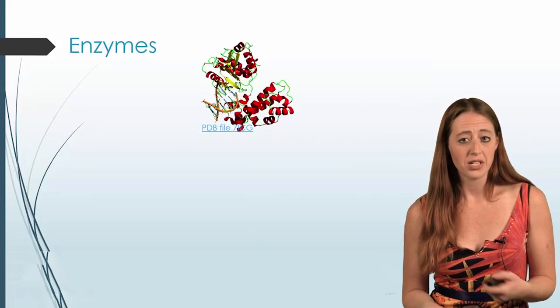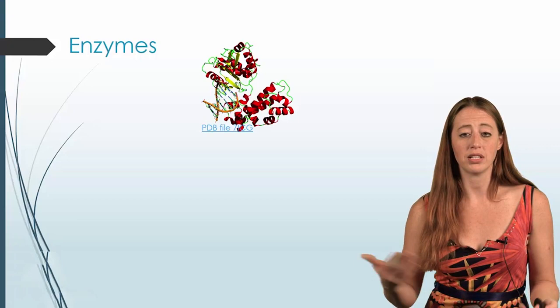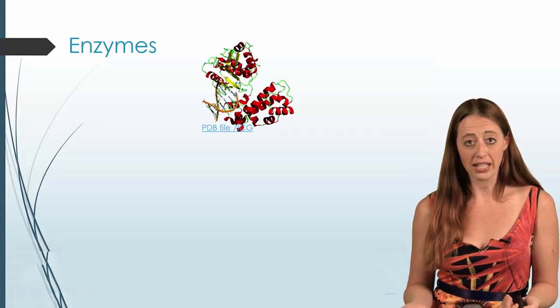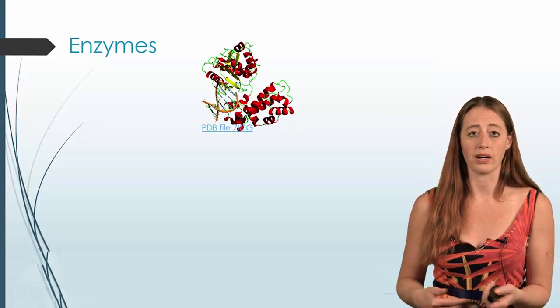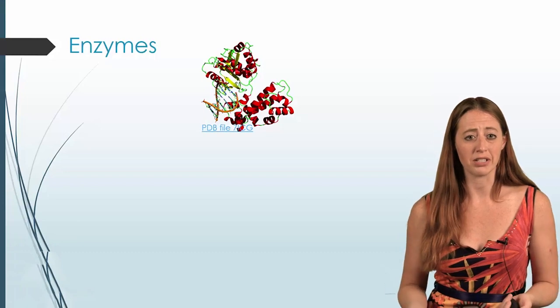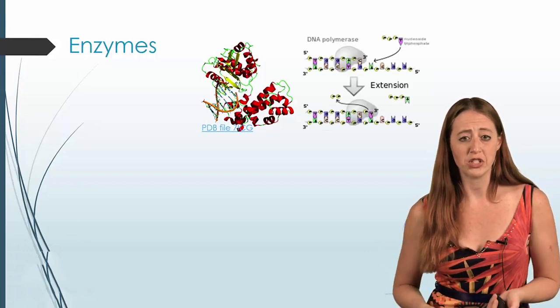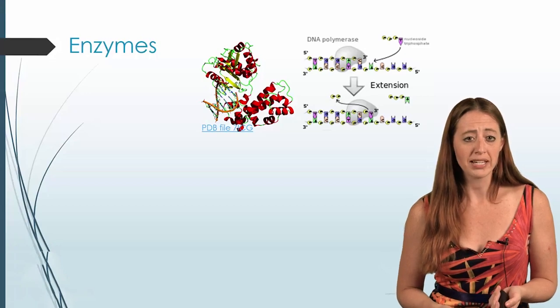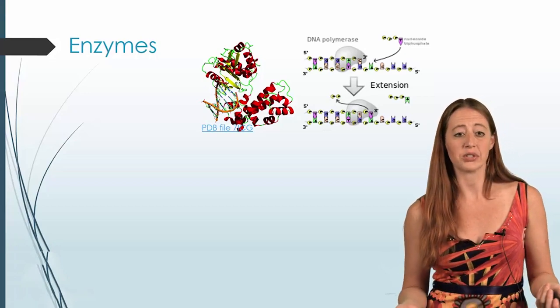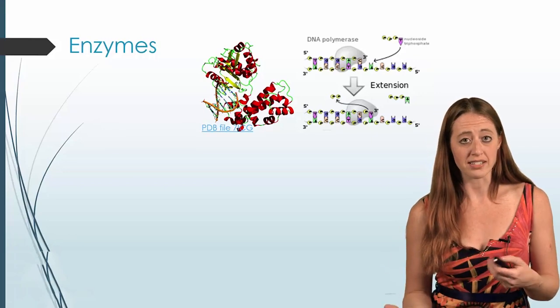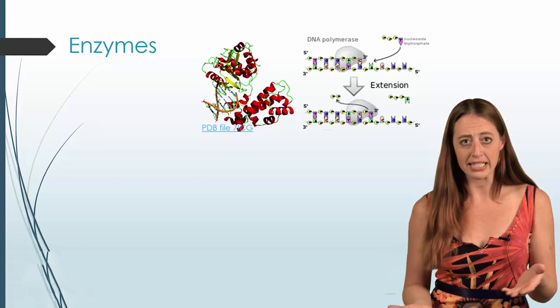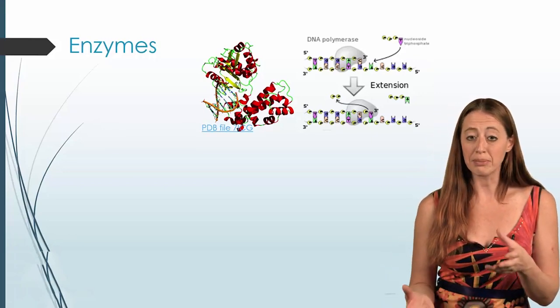So first off, enzymes. So these are something that you should have heard about in your various chemistry classes or biology classes or even just as a daily part of life. And so the way that these work, I just picked two very random ones. So I picked DNA polymerase because I think it's kind of an interesting one. So this one, for instance, if you have a vague idea of how DNA replicates.